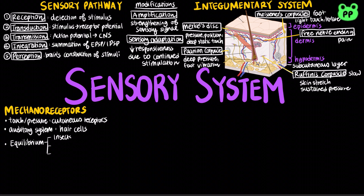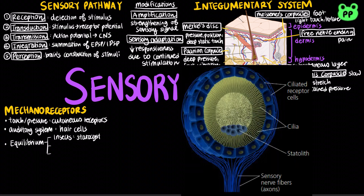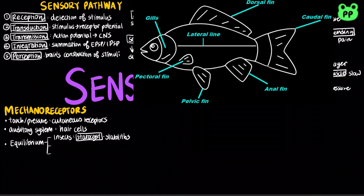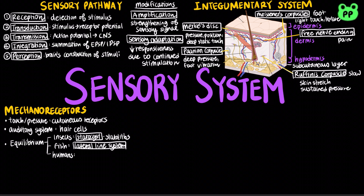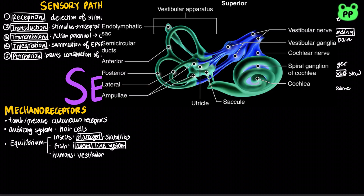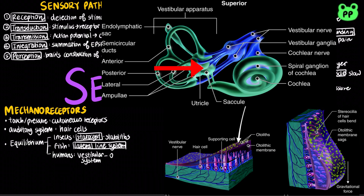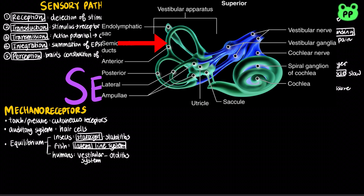Most invertebrates maintain equilibrium using sensory organs called statocysts, which contain mechanoreceptors that detect the movement of granules called statoliths. Most fishes and aquatic amphibians have a lateral line system along both sides of their body, which contains mechanoreceptors with hair cells that detect and respond to water movement. In humans, body position and balance is detected by the vestibular system. The utricle and saccule contain granules called otoliths that allow us to detect gravity and linear movement, while three semicircular canals contain fluid and allow us to detect angular acceleration such as the turning of the head.